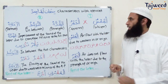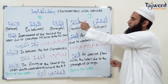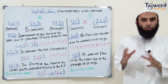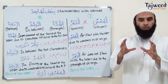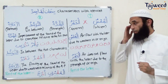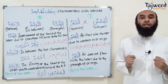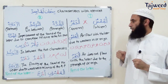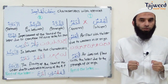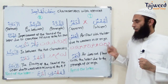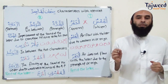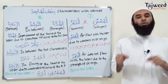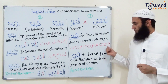The first group is al-Hams, and its opposite is al-Jahra. Al-Hams is a group of ten letters. Whenever we pronounce these letters, air should flow with them. Why? Because of the weakness in their origin. This is clearest with sukoon, though it also applies with fatha, kasra, and dhamma.